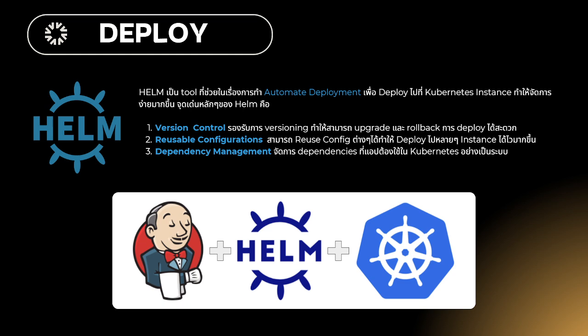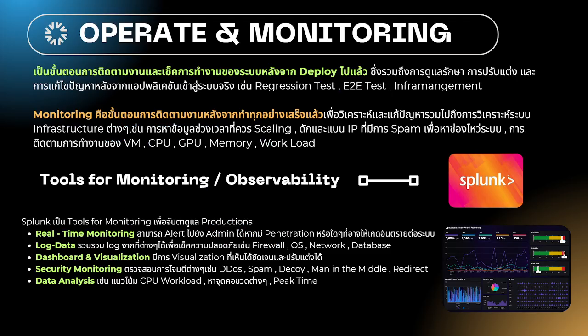This is the way to deploy to a Kubernetes instance, which makes it easy to manage with version control. Reusable configuration is the way to deploy it. Dependency management is also part of the deployment. The future involves operating components and deploying across different versions.